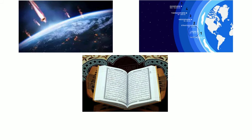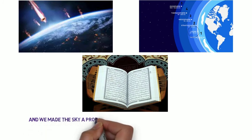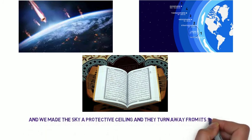Chapter 21, verse 32: And we made the sky a protective ceiling and they turn away from its sign. This verse indicates that the protection of the sky is a sign of Allah Almighty.